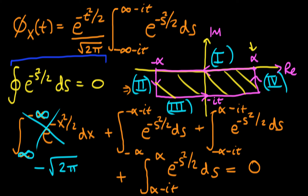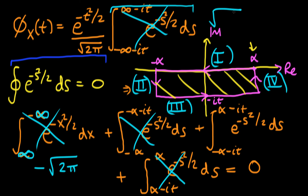For parts two and four: in both cases, s contains α, so when we square s we get α squared, and putting a minus in front gives e^(−α²). Because α is infinite, e^(−α²) goes to zero, so parts two and four both evaluate to zero. We're left with just the third component and the minus root 2π, so the integral we're interested in equals root 2π — obtained by moving the minus root 2π to the other side.